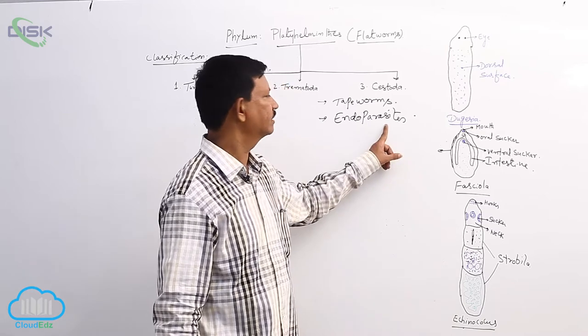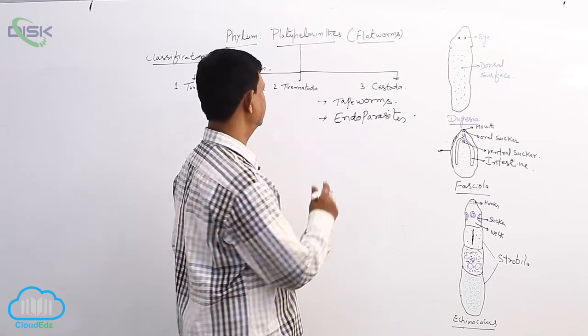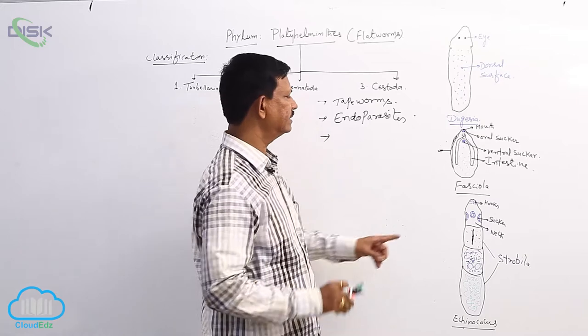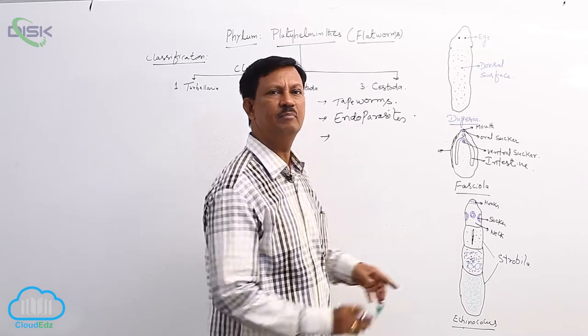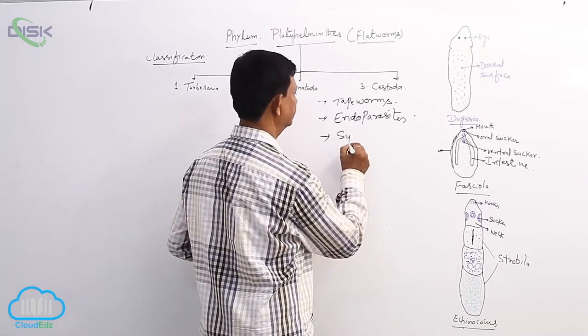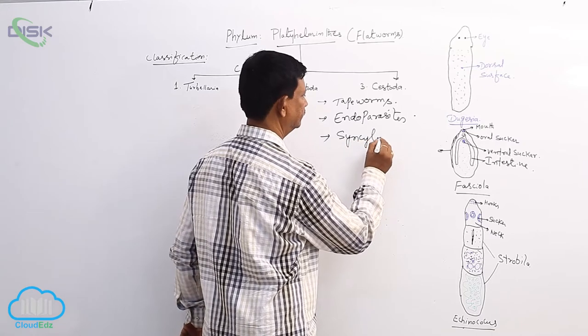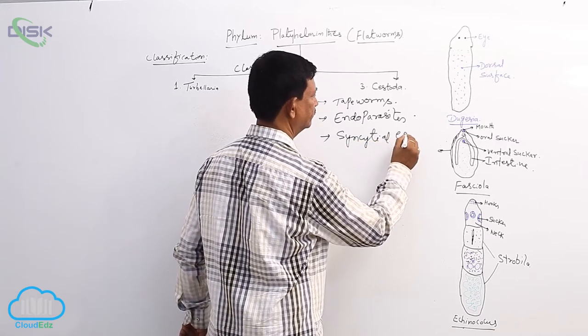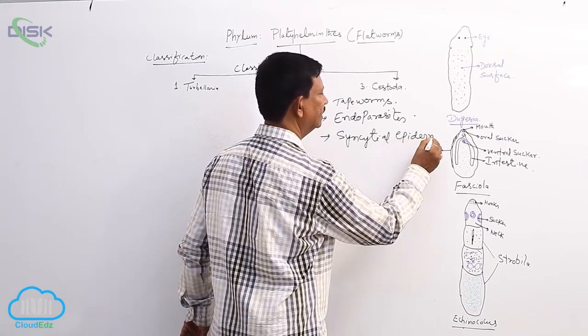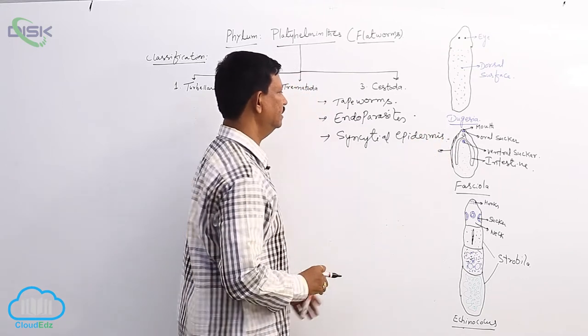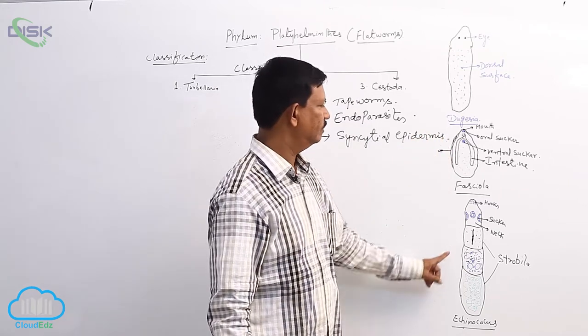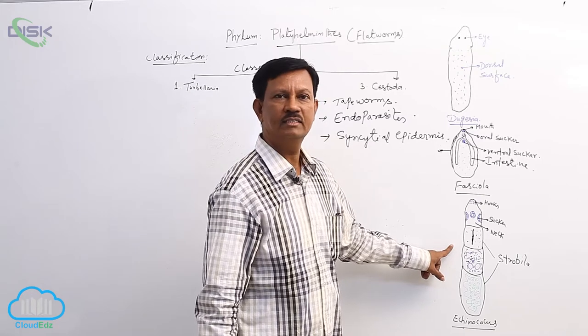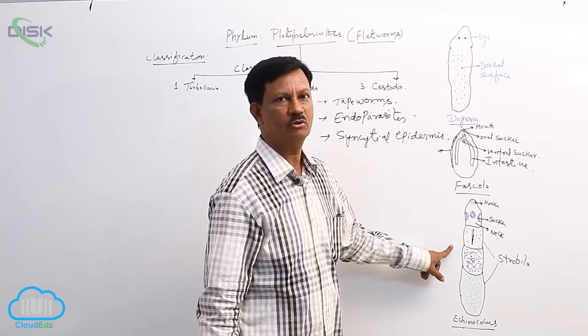The body is externally covered by a syncytial epidermis. Many nuclei are present in the epidermal cells, and the body is also covered by a tough tegument which gives protection.